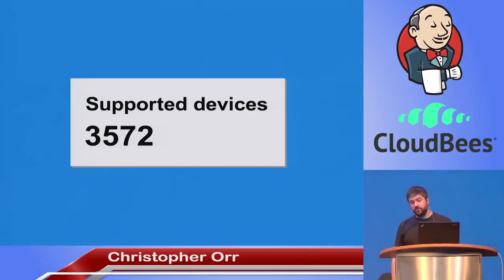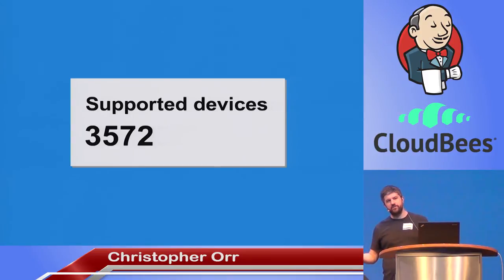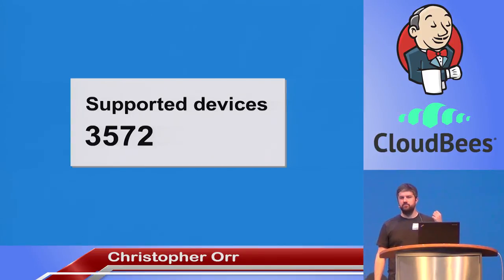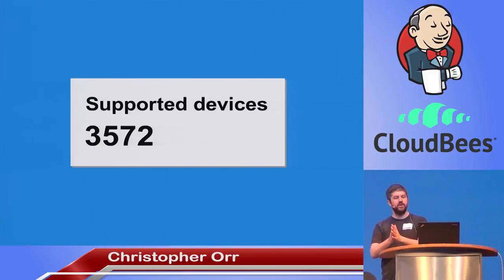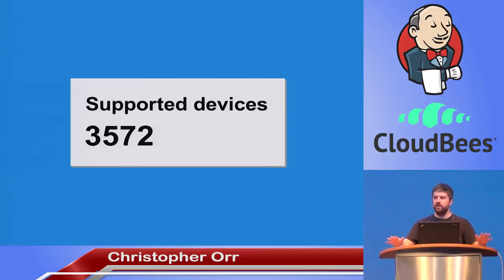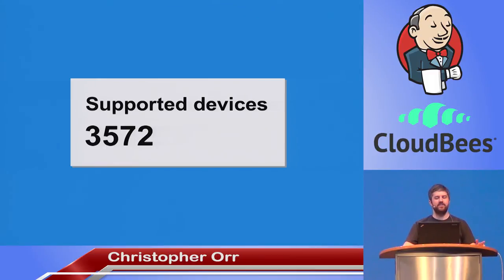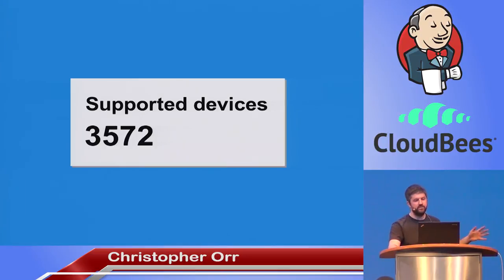That's 3,500 devices — completely different models with different combinations of operating system, screen size, maybe some have a hardware keyboard, some not, some have a tiny amount of RAM, some have two gigabytes of RAM. This diversity is pretty cool, but it's a bit of a pain for anyone trying to create a consistent app that will work well across as many of these 3,000 devices as possible.